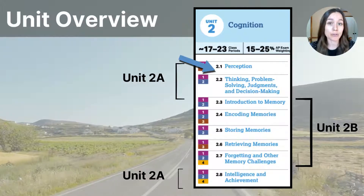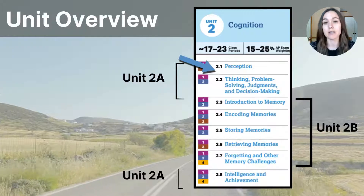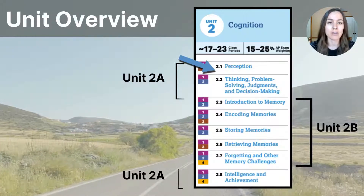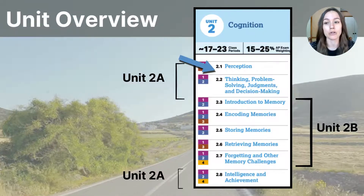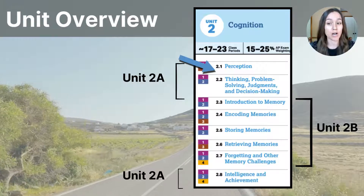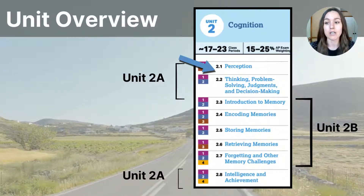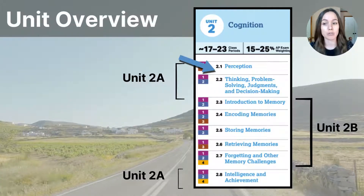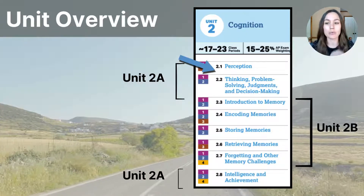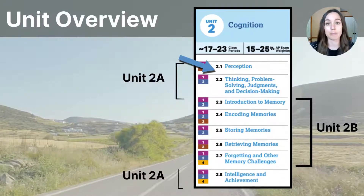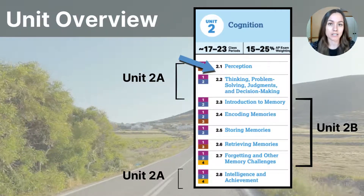In the previous video, you learned about general principles of perception, things like top-down and bottom-up processing methods for interpreting sensory information. From that foundational understanding, the College Board is now most concerned with you learning about one type of sensory processing, and that is visual sensory processing. So after this video on visual perception, we won't delve much deeper into the other areas of perception, but rather we will focus on moving on to topic 2.2, which involves things like thinking, problem solving, and decision making.